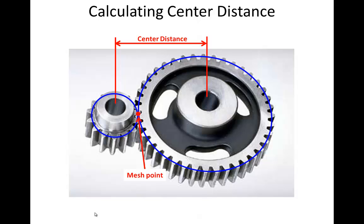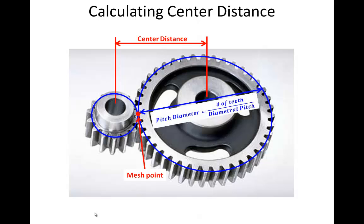The key to determining the ideal center distance between gears is to understand that the mesh point of the gears should be at the location where the pitch circles intersect. The diameters of the pitch circles are easy to calculate if you know the diametral pitch and the number of teeth. If we take the radius of the large gear and add it to the radius of the small gear, we will get the ideal center distance.